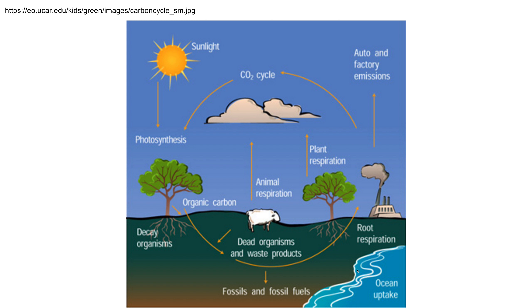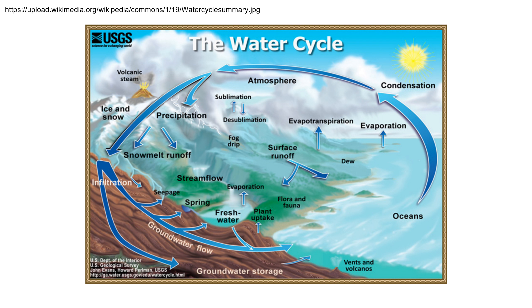You don't necessarily need to memorize all these cycles, but you should have a general idea of what goes on. The water cycle is a little more complicated than what you saw in 7th grade. It says evapotranspiration — you should know what transpiration is. Basically moisture goes up into the air and moisture comes back down, and it's a matter of how it moves throughout the environment — groundwater, infiltration, water being trapped in locations.